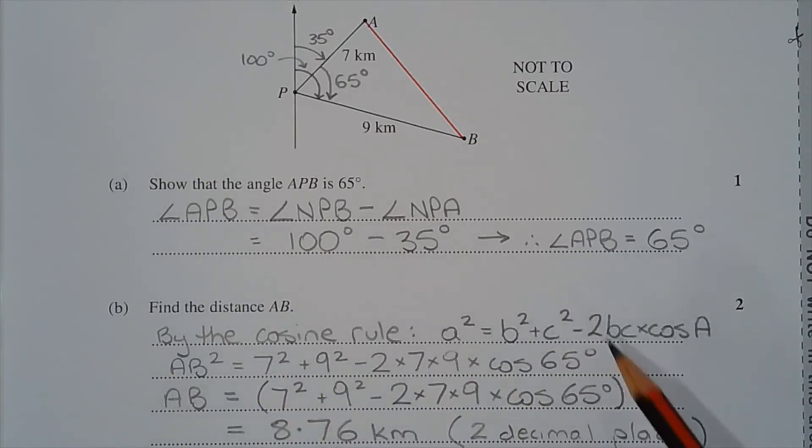And if we raise the right-hand side to the power of half, that's the equivalent of taking the square root, because we don't want AB squared, we just want AB. And that equals 8.76 kilometres, correct to two decimal places.